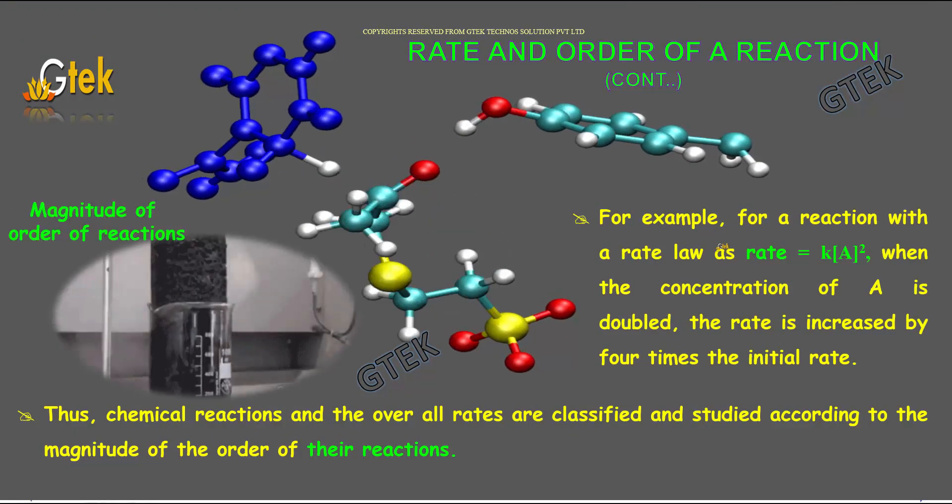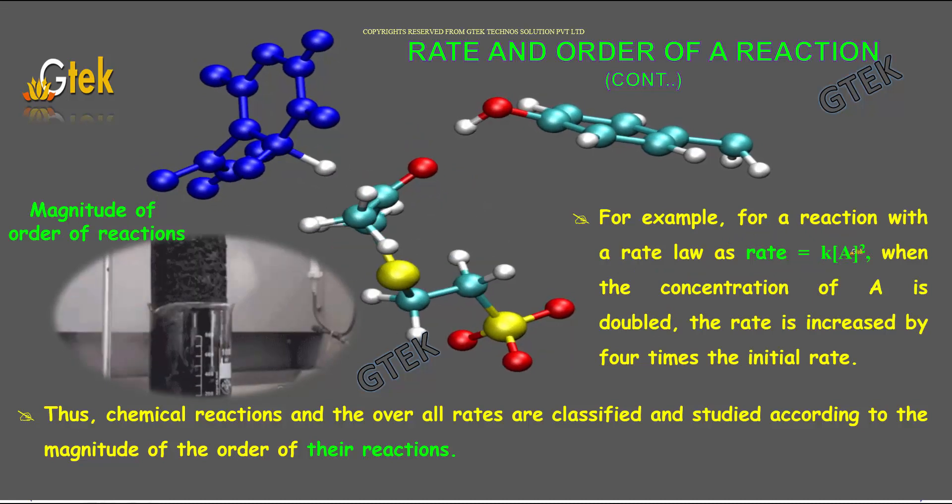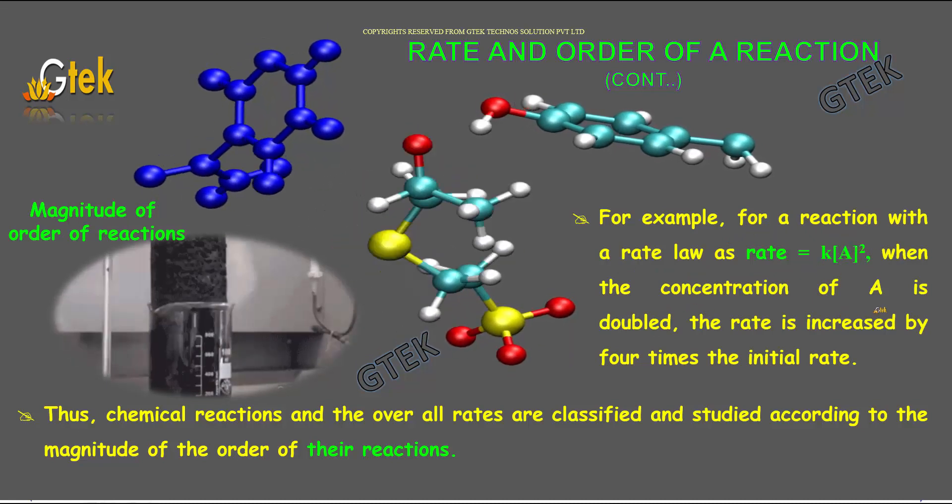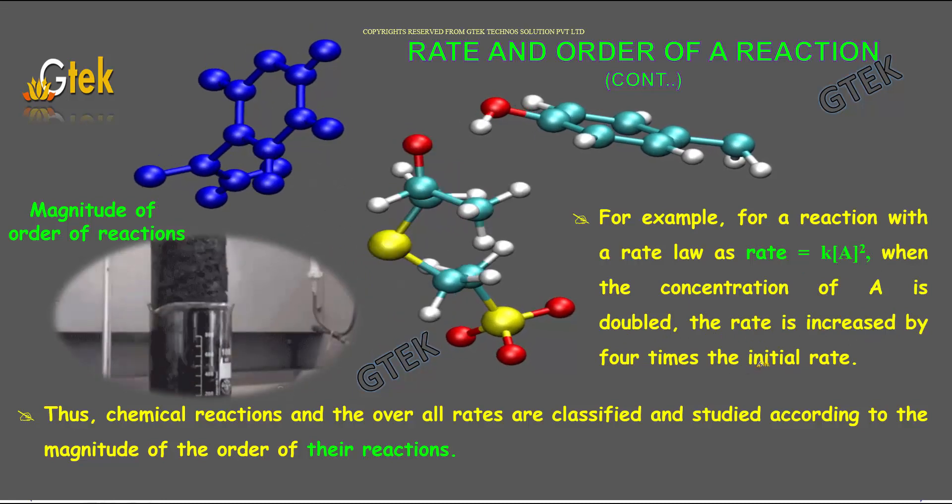For example, for a reaction with the rate law as rate equal to kA square, when the concentration of A is doubled, the rate is increased by 4 times the initial rate.